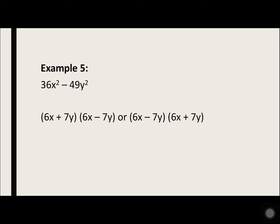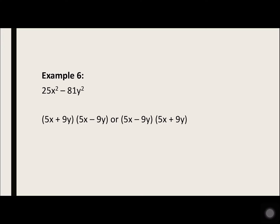Example 5: 36x squared minus 49y squared. 36x squared is 6x times 6x, and 49y squared is 7y times 7y. So you have 6x plus 7y times 6x minus 7y, or you can reverse it. Example 6: 25x squared minus 81y squared. 25x squared is 5x times 5x, and 81y squared is 9y times 9y. So you either have plus-minus or minus-plus.